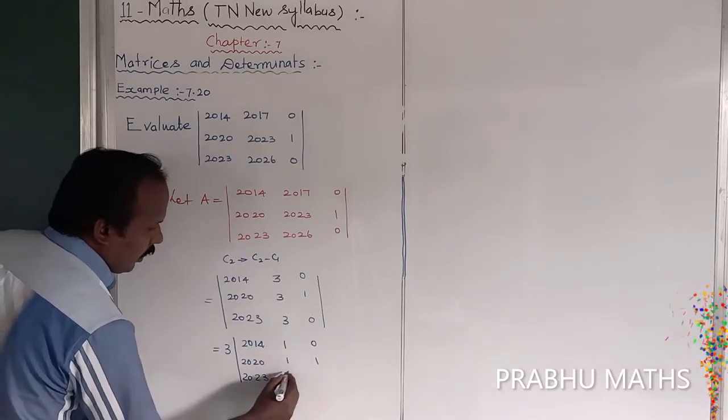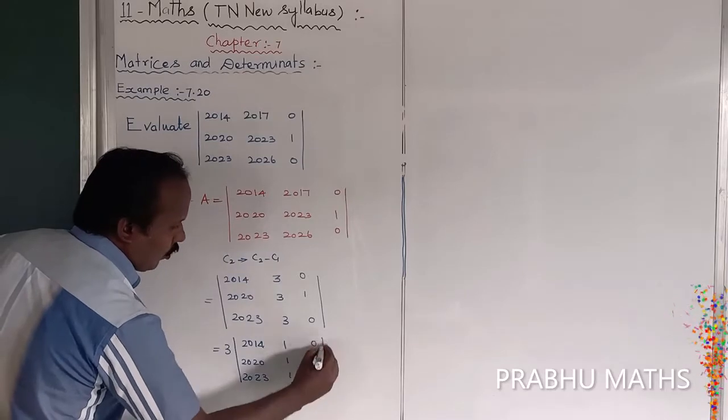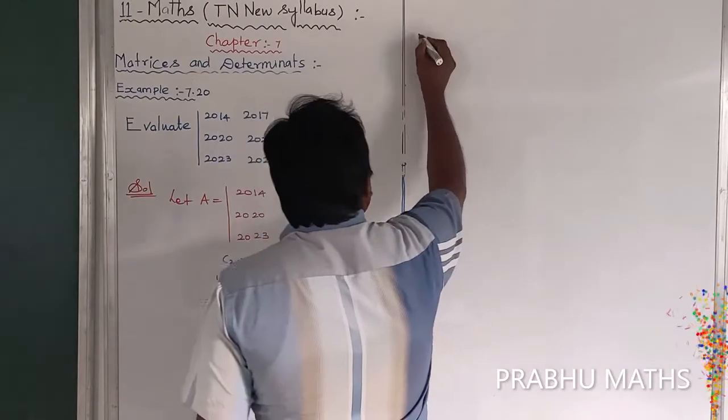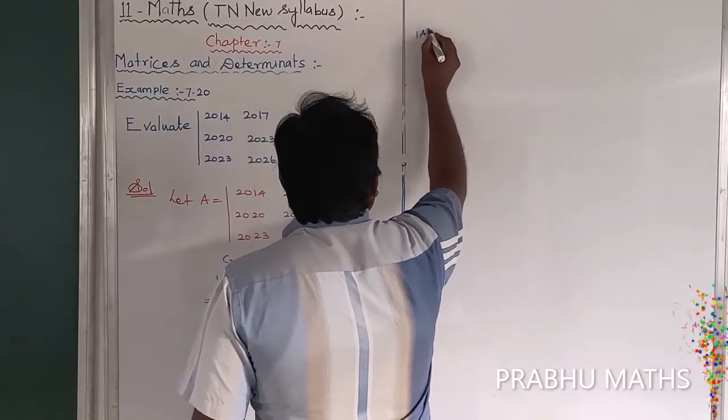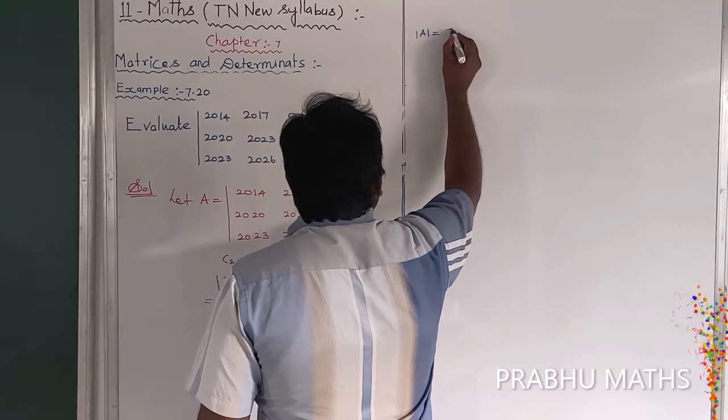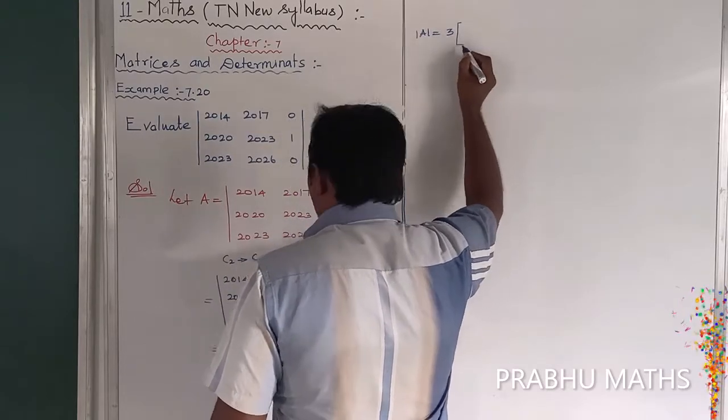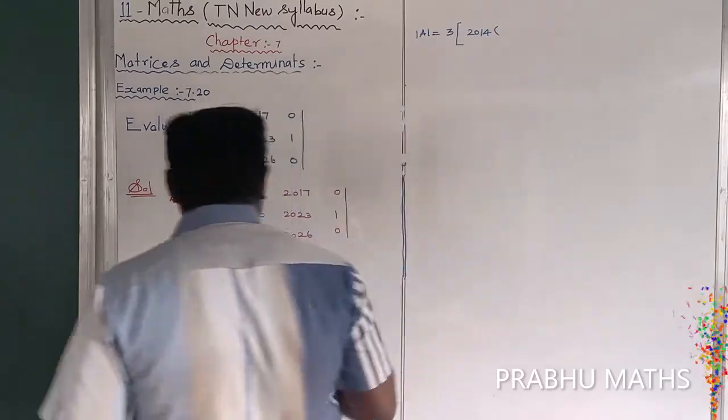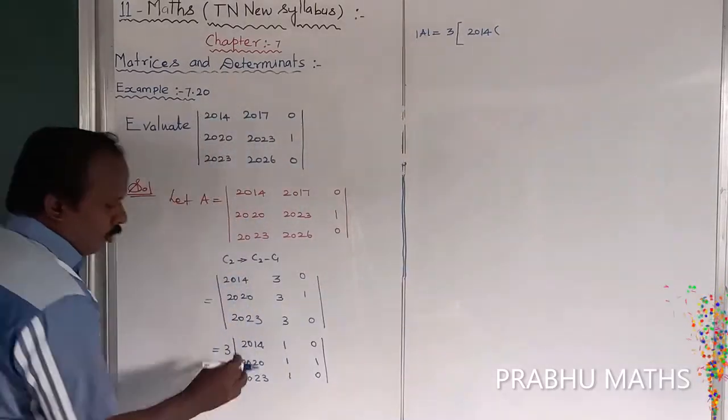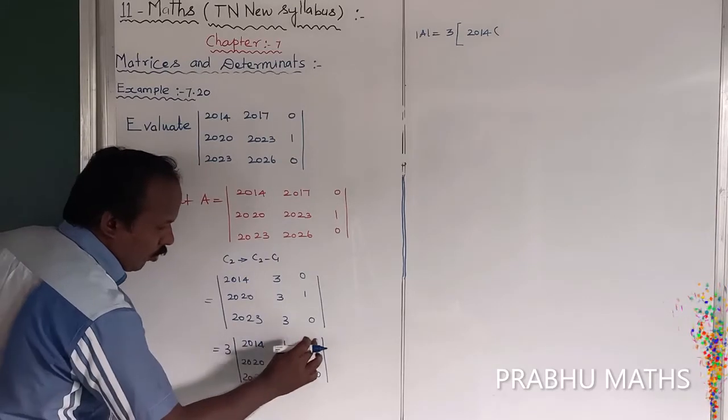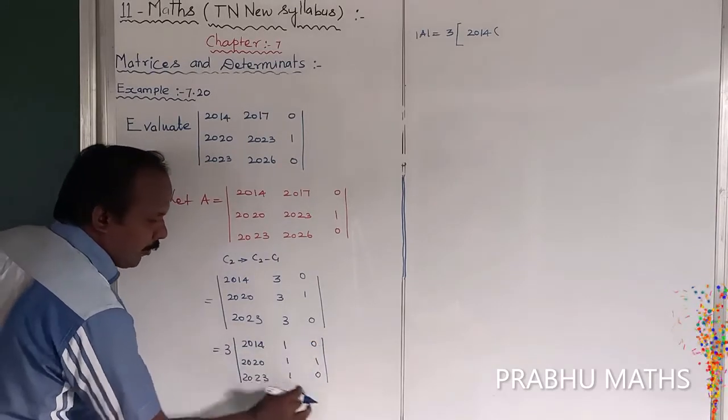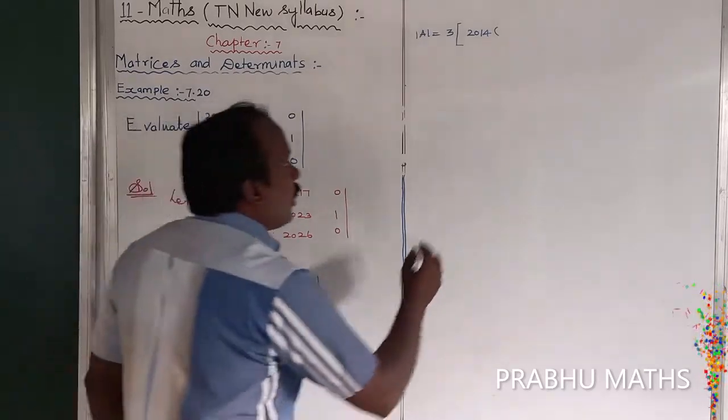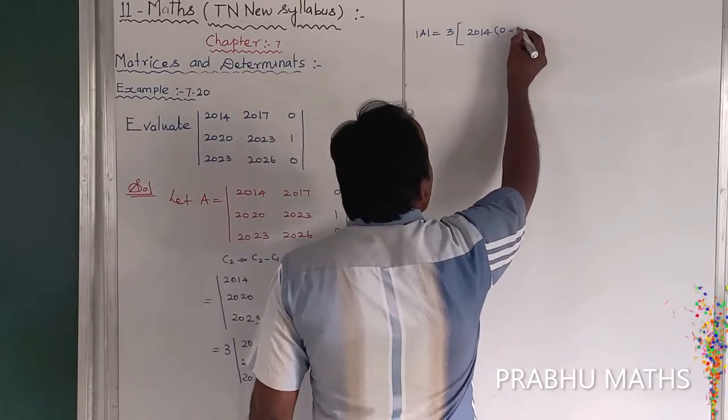Next 2023, 3, next 1, 0. Okay. Next expanding the R1 expansion, so determinant of A is equal to 3 into 3 into the first one 2014. 2014 means the entire column, the entire row should be closed. The remaining is here, this is the minor of this value. So first multiplication 0, second multiplication minus 1, so 0 minus 1.